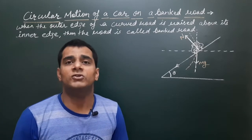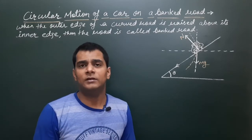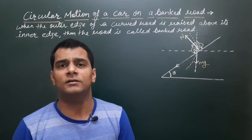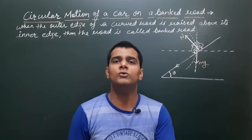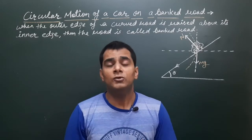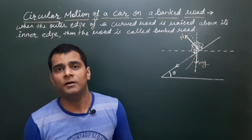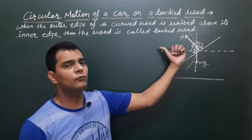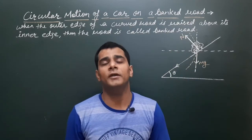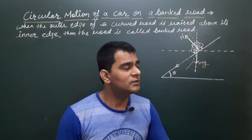The third force is the friction. Generally when we talk about a level road, there is a force that acts towards the center. For every circular motion there is a centripetal force requirement. On a level road, friction provides this centripetal force. But here on the banked road, both friction and normal reaction will be involved in providing the centripetal force.